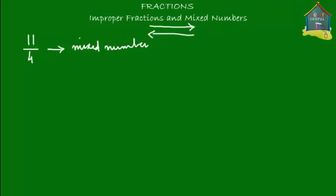We have 11 pizza slices because the numerator says 11. Let's draw 11 pizza slices. This is pizza slice number 1, then pizza slice number 2, pizza slice number 3, and pizza slice number 4. Now, 4 pizza slices make 1 pizza, so 4 pizza slices are grouped together into 1 pizza. This is your 1 pizza, made of 4 pizza slices.